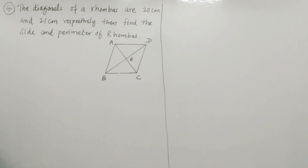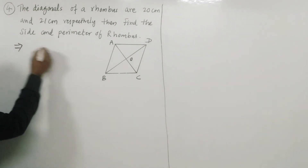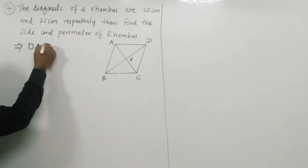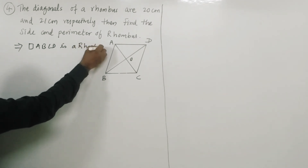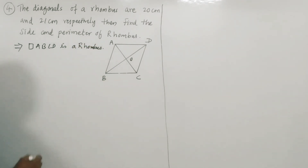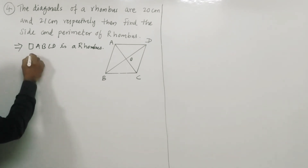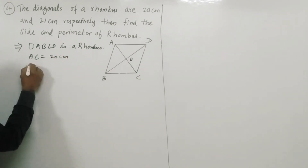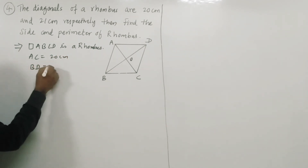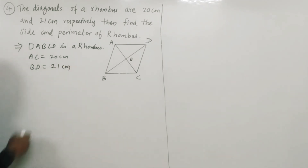Fourth example: diagonals of a rhombus are 20cm and 21cm respectively. Find the side and the perimeter of the rhombus. Let us consider quadrilateral ABCD as a rhombus, where diagonal AC is equal to 20cm and diagonal BD is equal to 21cm.